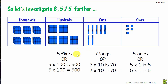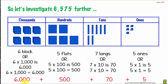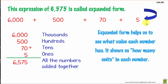In our flats we have five flats — five times one hundred — which is five hundred. And in our blocks we have six blocks, which is six times one thousand, which equals six thousand. We can also see this written as: six thousand plus five hundred plus seventy plus five. This expression is called expanded form.